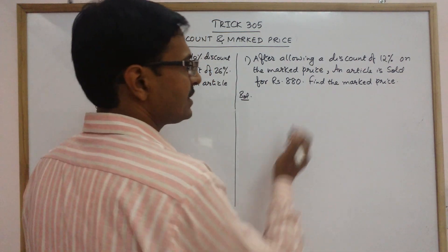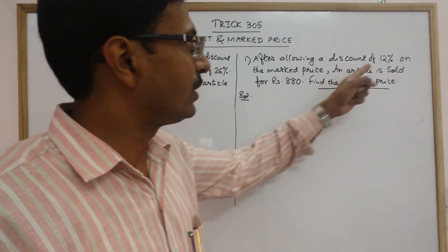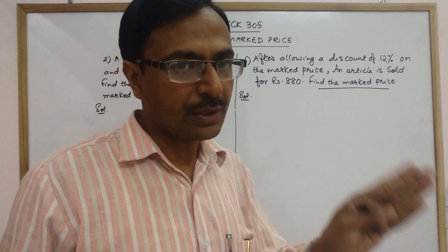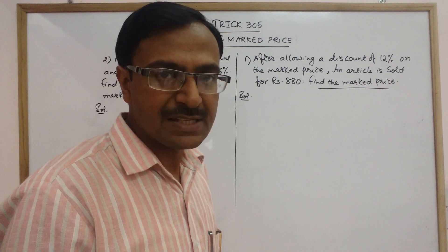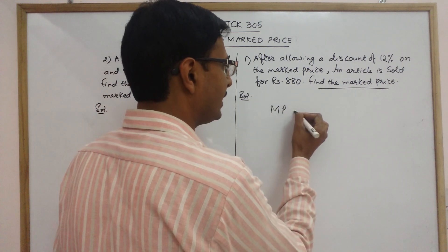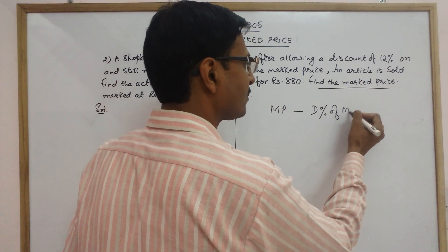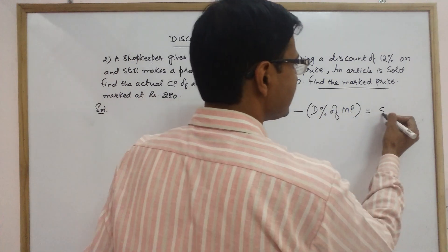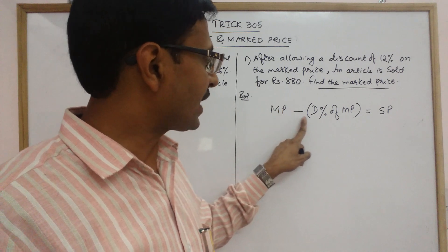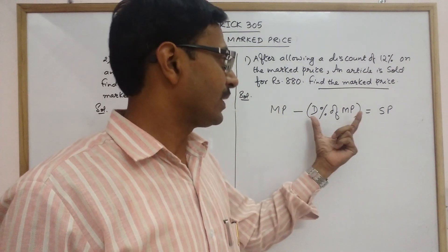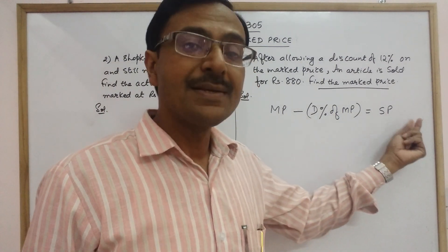We have to find the mark price. Whenever mark price is to be found out, remember: discount is always calculated on the mark price. If you remember this formula, most questions on discount will be easy. Mark price minus discount percent of mark price gives you the selling price. So from the mark price, we subtract the discount calculated on the mark price, and we get the selling price of the article.